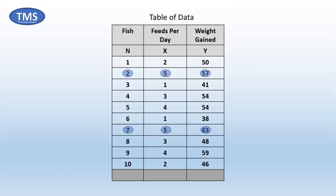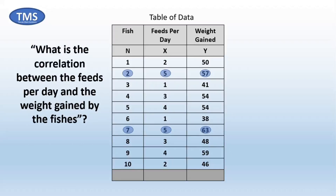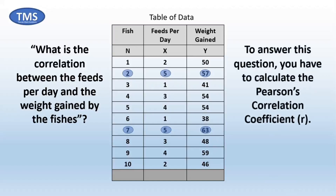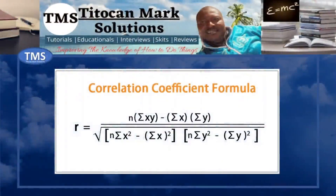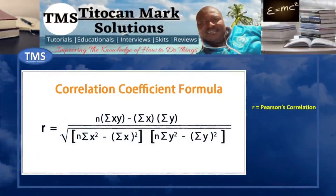The question now is: what is the correlation between the feeds per day and the weight gained by the fishes? To answer this question, you have to calculate the Pearson's correlation coefficient, which in this case is a two-tailed test analysis that will tell you about the strength of the relationship, if any exists, and the direction in which it exists. I will be using this formula, where R is Pearson's correlation, N is number of fish, X is feeds per day, and Y is weight gained by the fish.